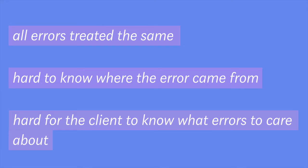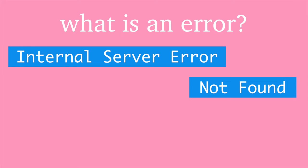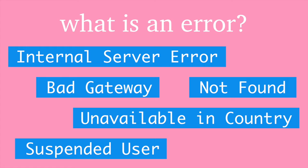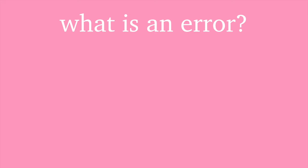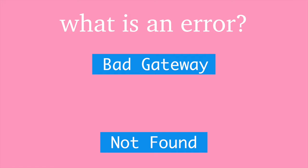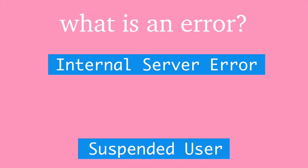It's also hard for the client to know what errors to care about. The client gets all these errors in this errors array, and it's kind of hard to know which ones are important. Which ones does the client care about? Do they care about all of them? So before we get into solutions, let's just talk about what is an error. Things that you might get back from your server are things like internal server error, not found, maybe bad gateway, unavailable in your country, suspended user. So these are all examples of what you might get back in a response. Those don't really seem all the same to me. Bad gateway seems a little more severe than not found. And an internal server error versus a suspended user — those also don't seem the same. An internal server error seems pretty bad, like someone should get paged for that. But you shouldn't get paged if someone is a suspended user. That seems like a pretty normal thing that would happen.